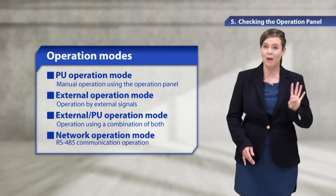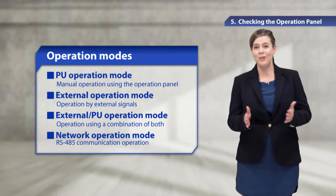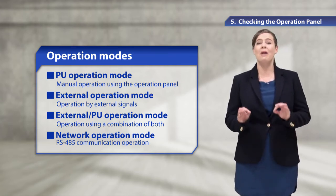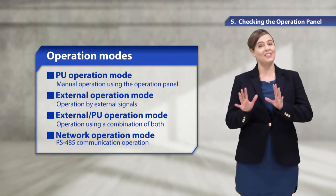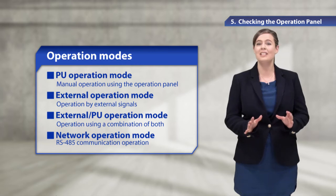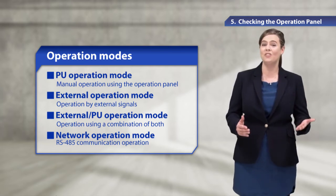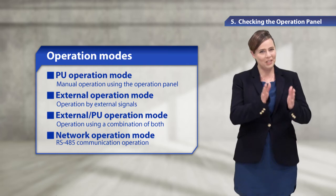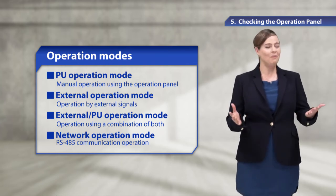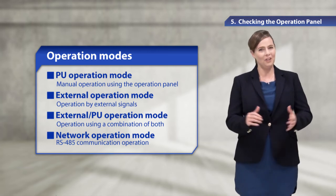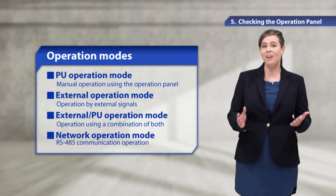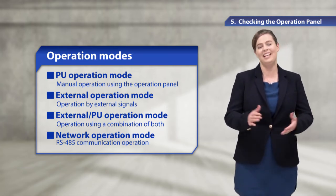I'll first introduce the operation modes. The inverter has four operation modes. The PU operation mode is for manual operation using the operation panel. The external operation mode is for operation using external signals. The external PU operation mode is for operation using a combination of both, and the network operation mode is for RS-485 communication operation.